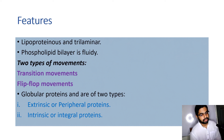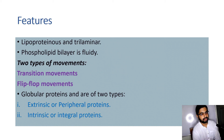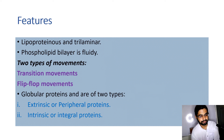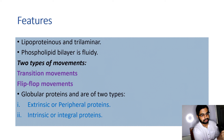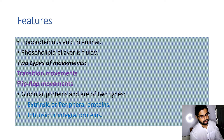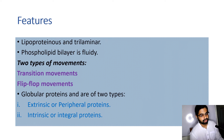Features: According to Singer and Nicholson, the plasma membrane is lipoproteinous and trilaminar — that is, it is made up of lipids and protein and is trilaminar in nature. The phospholipid bilayer is fluid, and two types of movements can occur: transition movement, which is the movement of molecules within the same layer, and flip-flop movement, which is the migration of molecules from one layer to another.